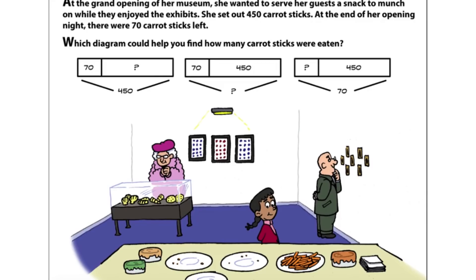At the grand opening of her museum, she wanted to serve her guests a snack to munch on while they enjoyed the exhibits. She set out 450 carrot sticks. At the end of her opening night, there were 70 carrot sticks left. Which diagram could help you find how many carrot sticks were eaten?